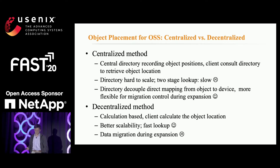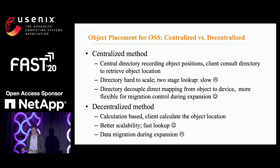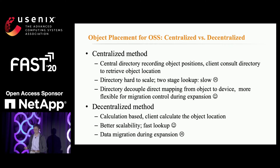However, the directory introduces a metadata retrieval stage and thus is slow. In contrast, decentralized placement methods uniformly distribute objects among the OSDs without relying on a central directory, and usually outperform centralized methods in I/O performance, because clients can directly access objects by calculating the responsible OSDs. However, as we will see, decentralized methods cause severe data migration in cluster expansions.